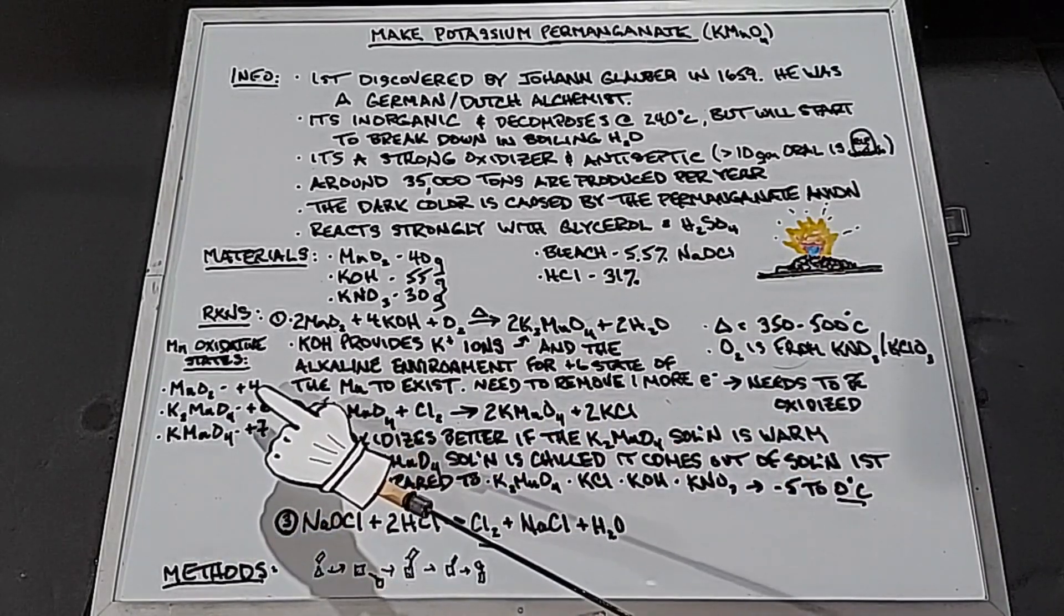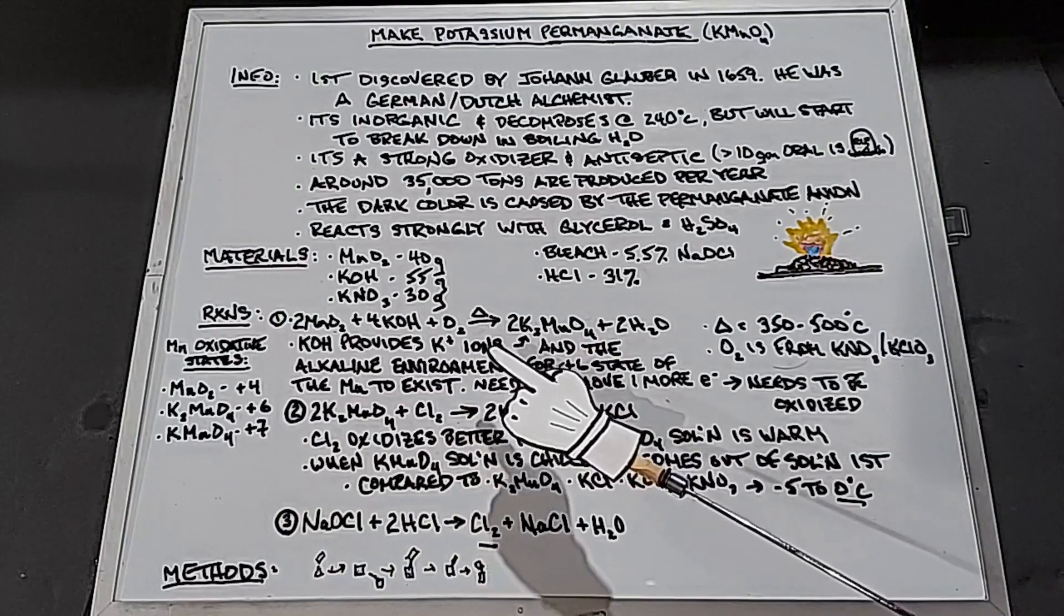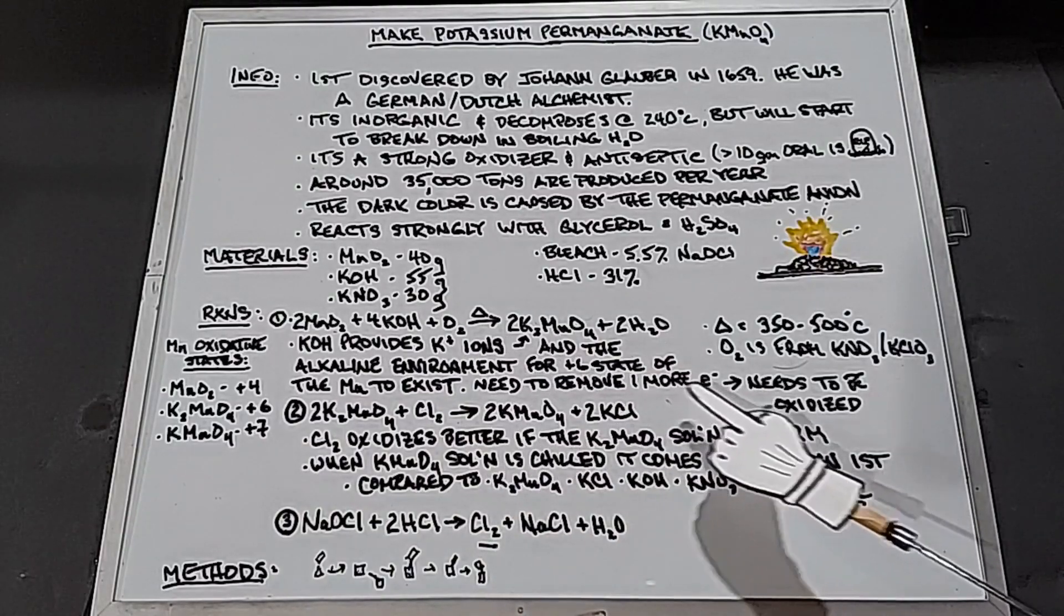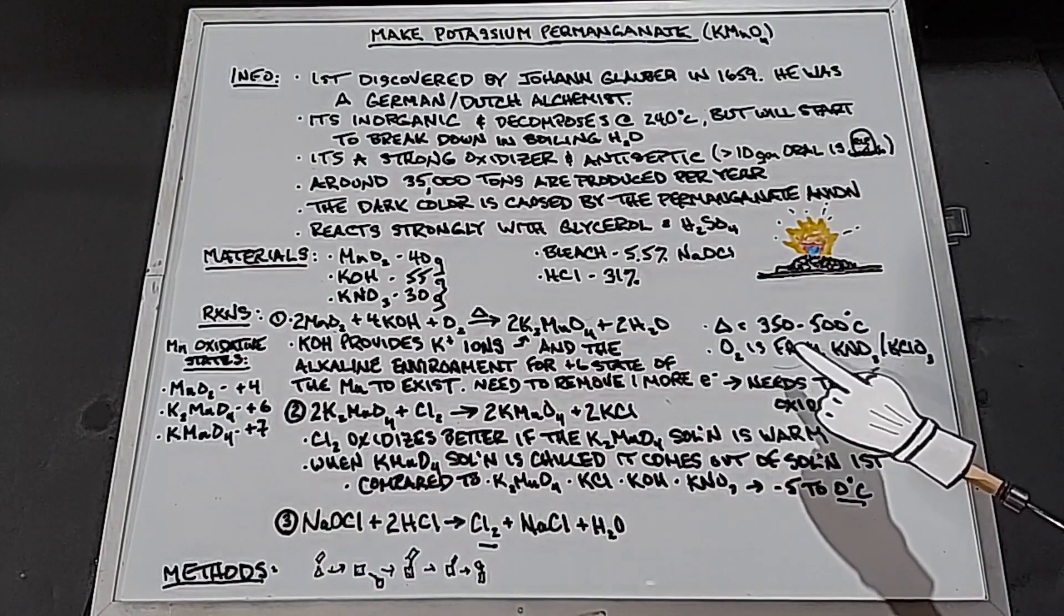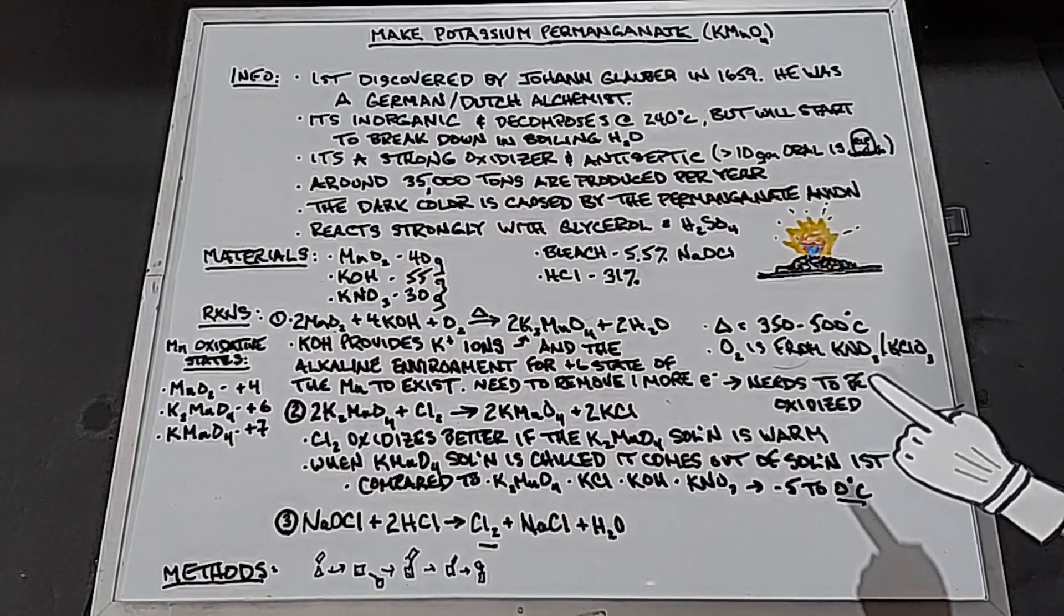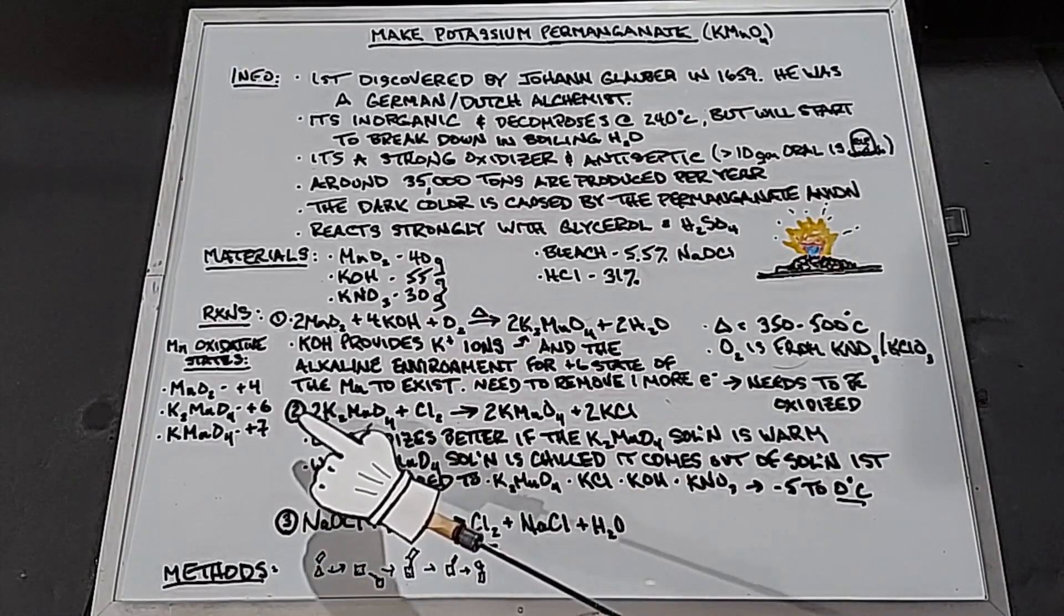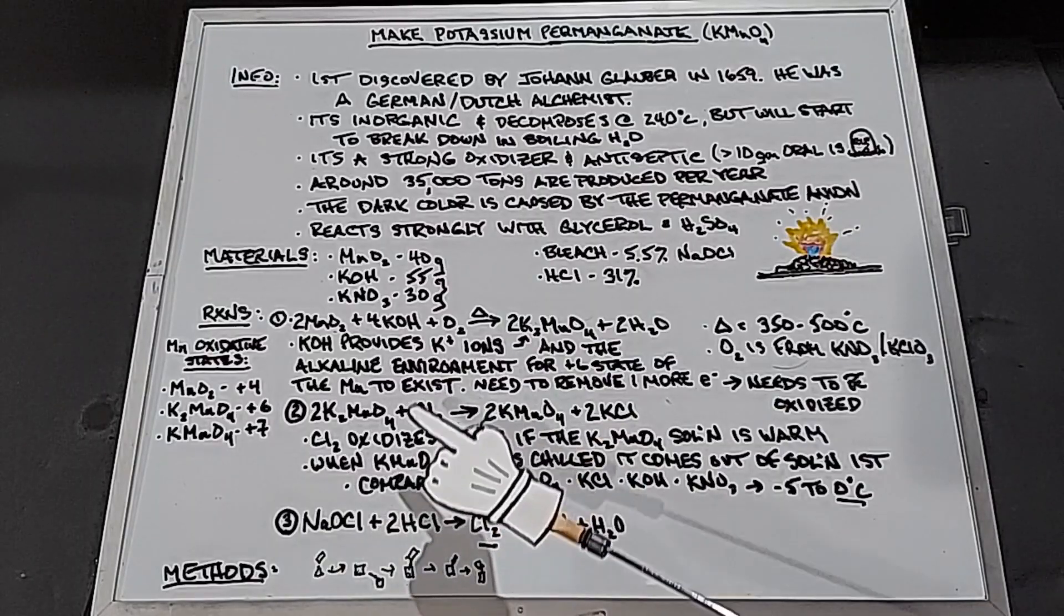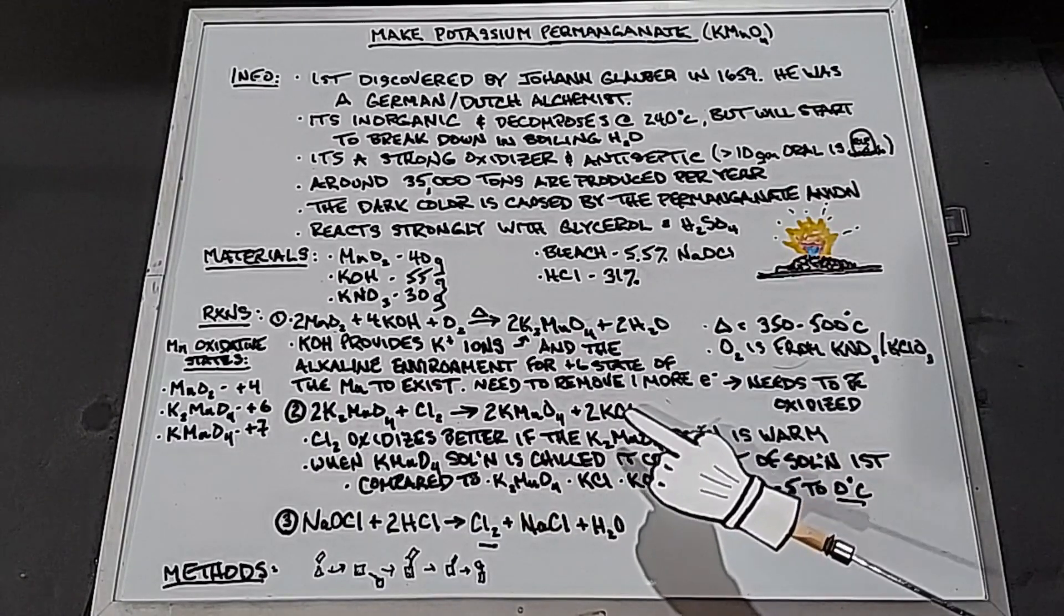Here is the potassium manganate in the plus six state. We need to remove one more electron to get to potassium permanganate in the plus seven state. So the potassium manganate needs to be oxidized. We're going to oxidize it using chlorine gas. The next reaction is two potassium manganate plus chlorine gas yields two potassium permanganate plus two potassium chloride.